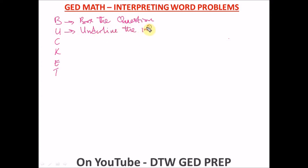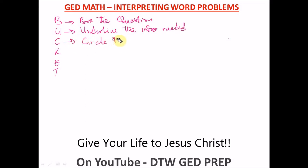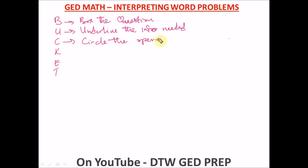The next letter C means you circle the operation vocabulary. What I mean by this is that in some word problems they'll say 'combine,' or 'twice as much' — those are operation vocabulary. So you circle all of those operation vocabulary words in the problem.